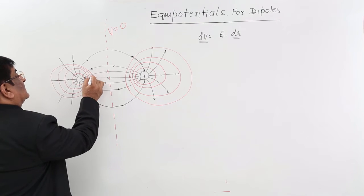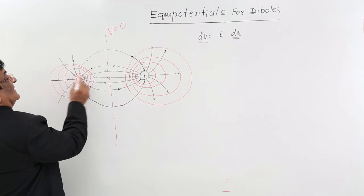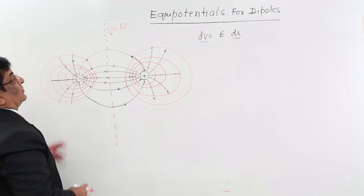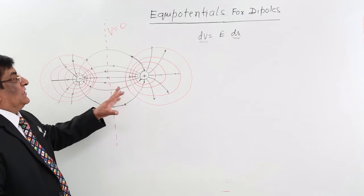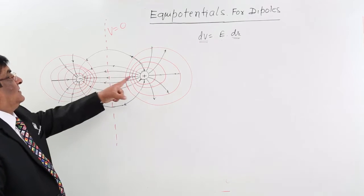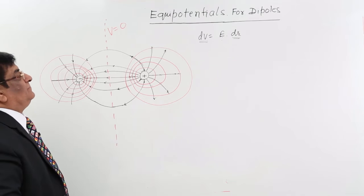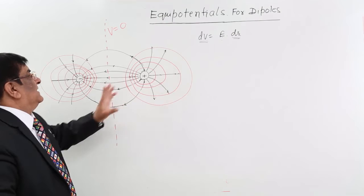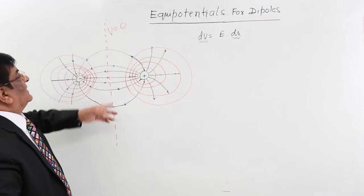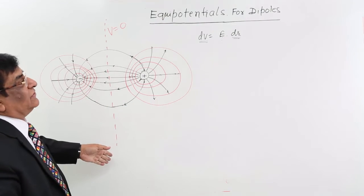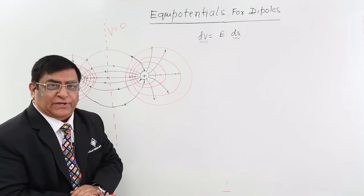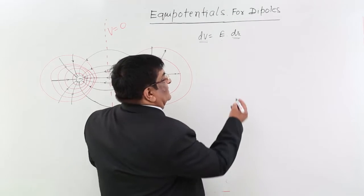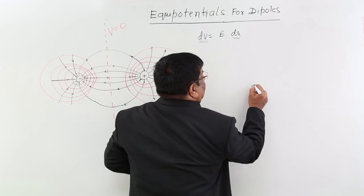The distance goes on increasing on this side like this. So these are the equipotentials for plus and minus — two types of charges. Here they are closer, and here they are going away because the electric field is getting weak, and at the centre V is equal to zero, which we can take as an equipotential.